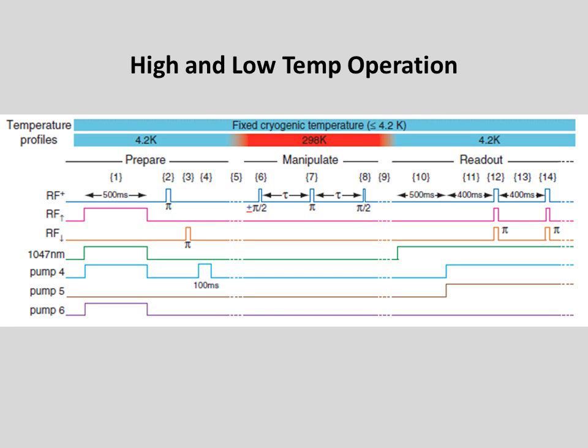So, at steps 1 through 3, shown here, the nuclear spin is hyperpolarized with radiofrequency pulses, and at step 4, the phosphorus atom is optically ionized.